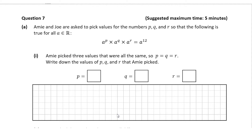In question A, we're told that Amy and Jo are asked to pick values for the numbers P, Q and R so that the following is true for all of A. So it's A to the power of P multiplied by A to the power of Q multiplied by A to the power of R is equal to A to the power of 12. We're told that Amy picked three values that were all the same, so P is equal to Q is equal to R, and we're asked to write down those values.